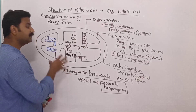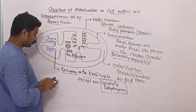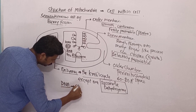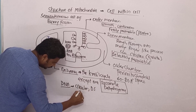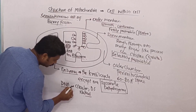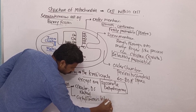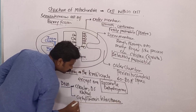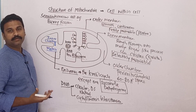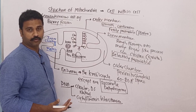The matrix also contains the mitochondrial DNA. The DNA of mitochondria is circular, double-stranded, and naked. This DNA is responsible for cytoplasmic inheritance, which is also called maternal inheritance, because all the mitochondria in our body come from the mother and not from the father.